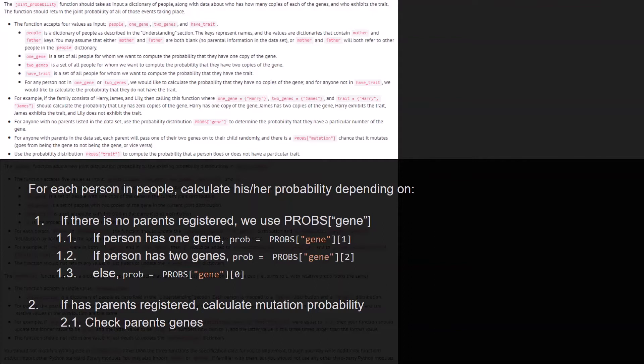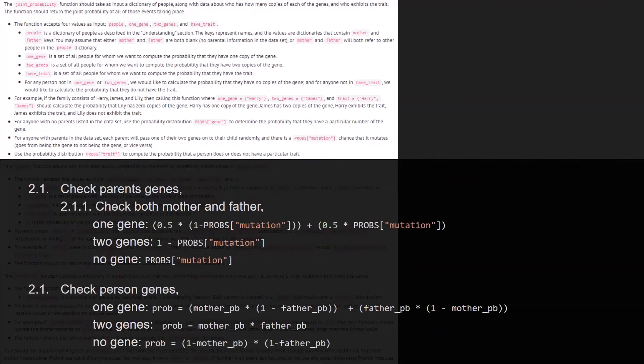Also we have to calculate if the person has the parents registered, so we calculate the mutation probability and then we check for the parents' genes. We do it for both, mother and father, and depending on the number of genes for the parents, we have a different formula. So if it is one gene, what it would be is the 50% multiplied by the probability of mutation and the probability of not mutation. Then for two genes, what we expect is to have the probability of not mutation, so it's 1 minus the probability of mutation, and for no genes, what we would expect is the mutation probability.